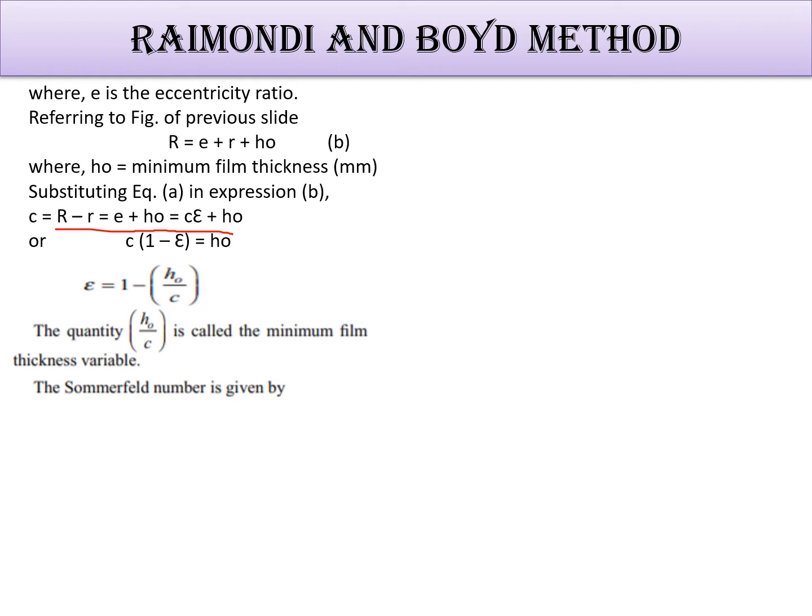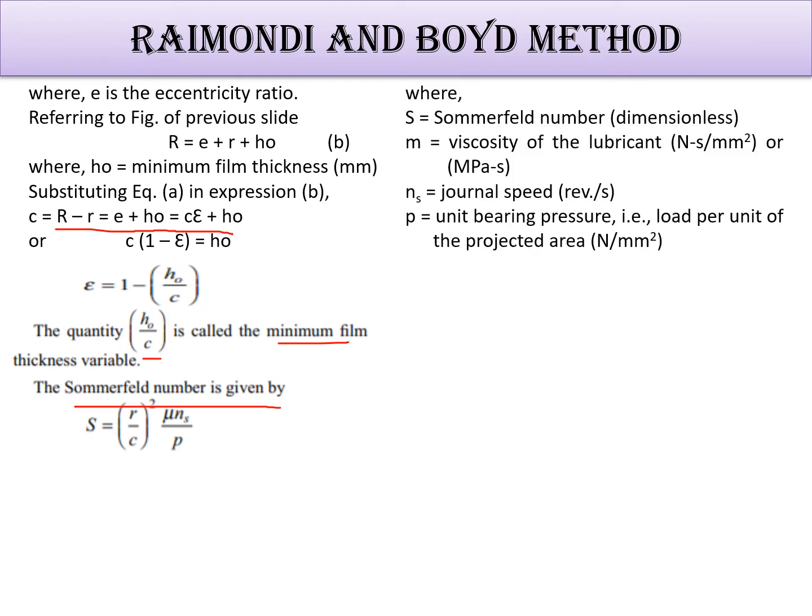So the Sommerfeld number, which we have seen in the Reynolds equation, that is S equals (r/c)² times μns upon p. Where μ is viscosity of the lubricant, ns is the journal speed, and p is the unit bearing pressure. So the Sommerfeld number contains all variables which are controlled by the designer.